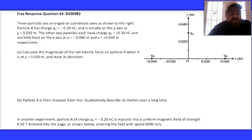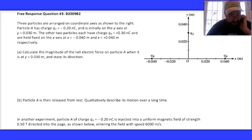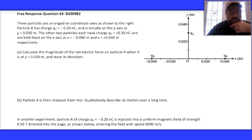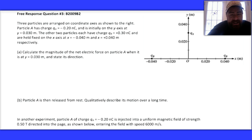This is the third question from the magnetism review packet. There's an awful lot of electrostatics in it, some vector math, so it's still cool when you read part B — I think there's some really interesting stuff going on here. The question reads: three particles are arranged on a coordinate axis as shown. Particle A is negatively charged, negative 0.2 nanocoulombs, and is initially at rest on the y-axis at position y = 0.03 meters. The other two particles each have a charge of positive 0.3 nanocoulombs and are held fixed on the x-axis at negative 0.04 and positive 0.04, respectively. Calculate the magnitude of the net electric field on particle A when it is at 3 centimeters from the origin.